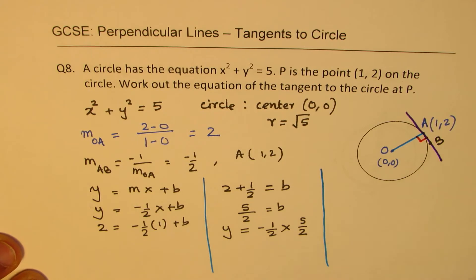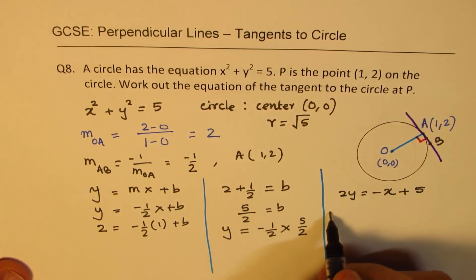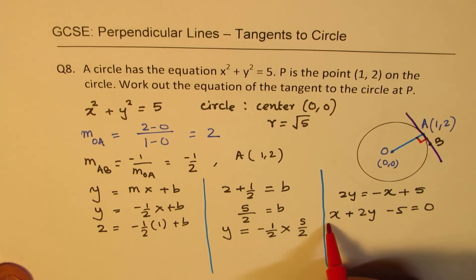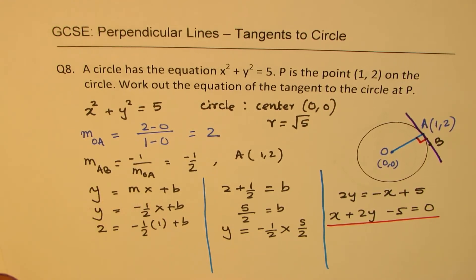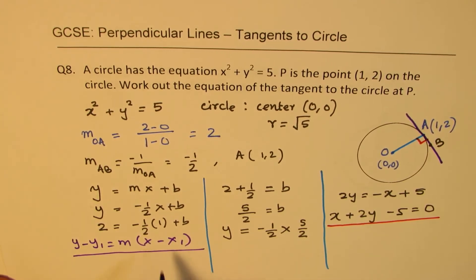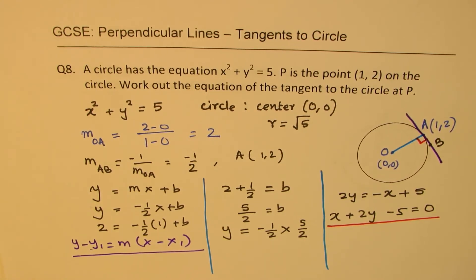At times you may be required to write this in standard form. Multiply everything by 2: 2y = −x + 5, then bring all terms to the left to get x + 2y − 5 = 0. Alternatively, you can use the point-slope form: y − y1 = m(x − x1). This equation directly gives you the answer in standard form and is equivalent to rearranging the slope formula. Both methods are equally valid.